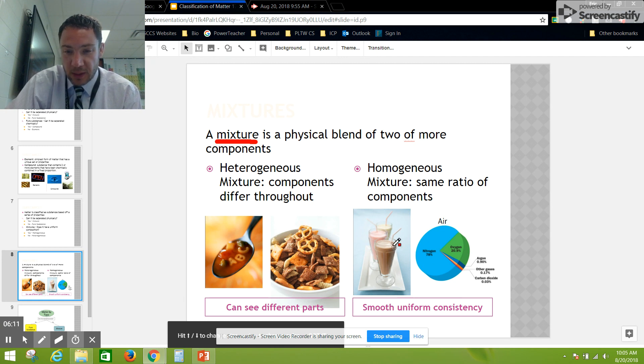Think of homogeneous: there's the same ratio of the components throughout. We have chocolate milk and air. When you have chocolate milk, it's the same ratio of chocolate to milk throughout the whole thing.